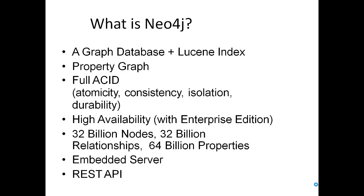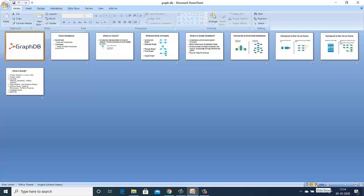So what is Neo4j? It's a graph database plus a lookup index, a property graph, and full ACID — atomicity, consistency, isolation, durability. It offers high availability with the enterprise edition, so you can have many nodes, an embedded server, and a REST API.